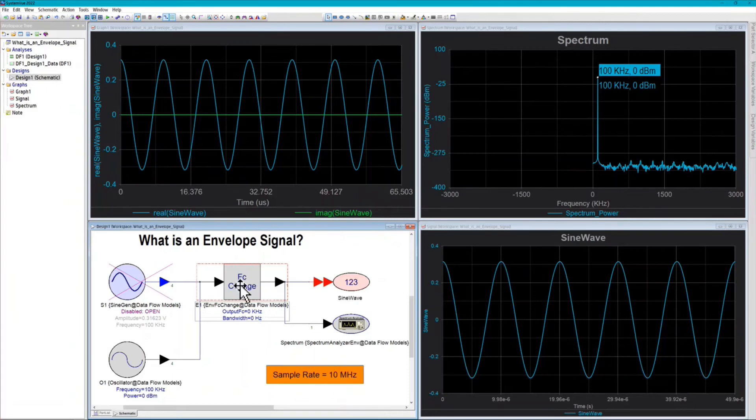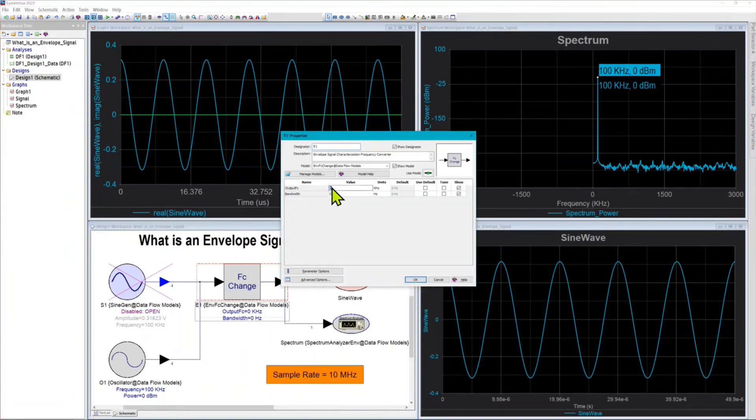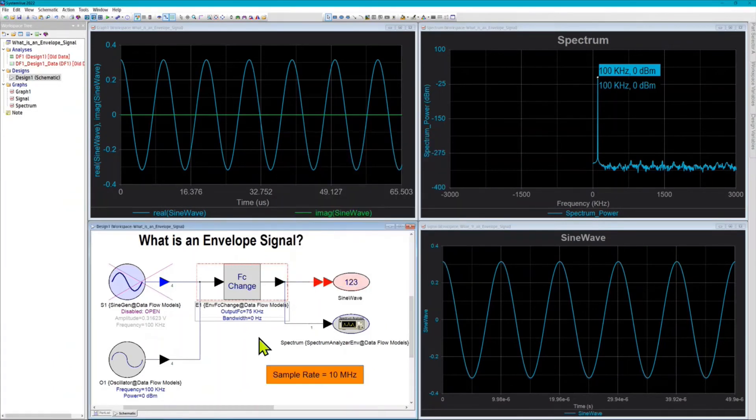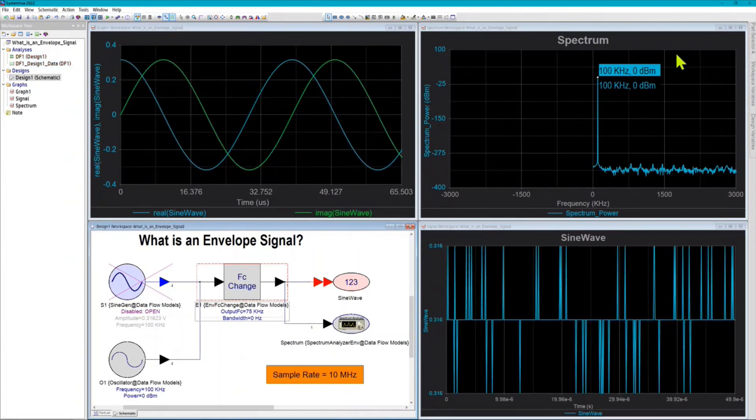Just to finish this demonstration, let's change the F sub C of the change part to some number that has no relation to the original signal, and let's run it again. The spectrum is still correct up here in the upper right. But the sine wave now doesn't look very good. It's really meaningless because of the fact that we did this to the signal.